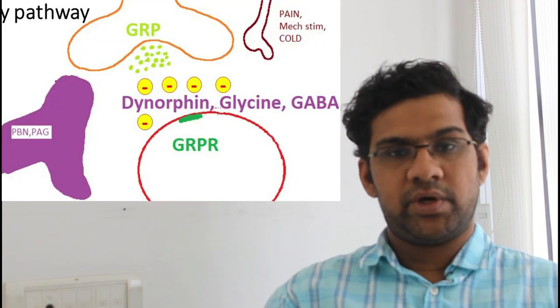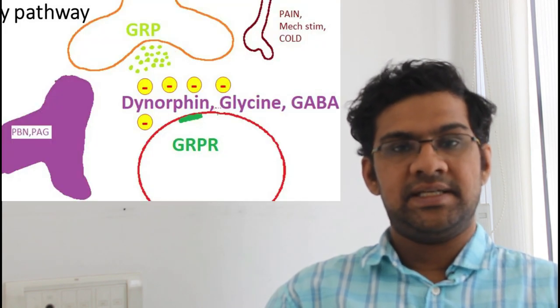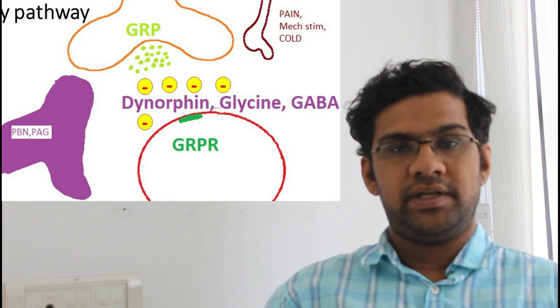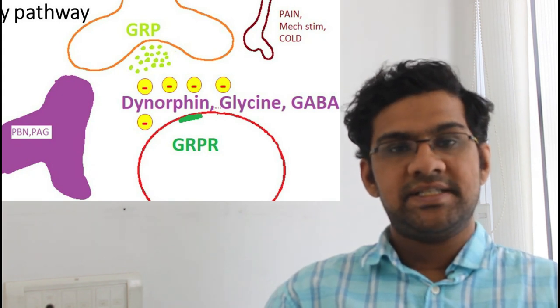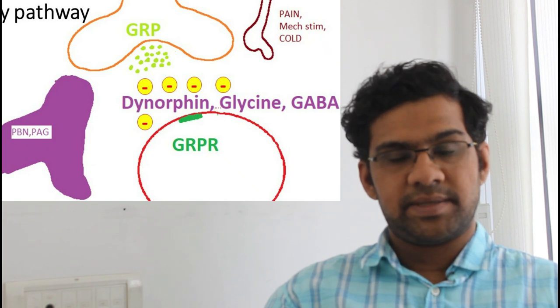Now let's know a little about inhibitory pathways. The inhibitory pathways of itch sensation usually start from the parabrachial nucleus and periaqueductal gray matter which are present in the brain. From there, the neurons come downwards to inhibit the neural transmission of itch sensation. These neurons produce substances like dynorphin, glycine, and GABA, which inhibits the activation of GRP receptors by GRP, that is gastrin-releasing peptides.